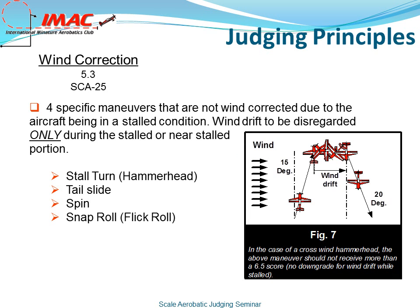Take a look at figure 7 from your rule book, page 25. This example is a hammerhead turn in a crosswind. On the upline, a one-and-a-half-point deduction was taken because of a 15-degree drift. The wind drift during the stalled portion should not be deducted. The aircraft picked up a 20-degree downline drift. Therefore, the score would not be higher than a 6.5.